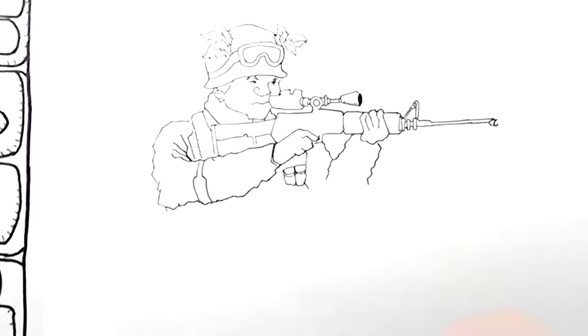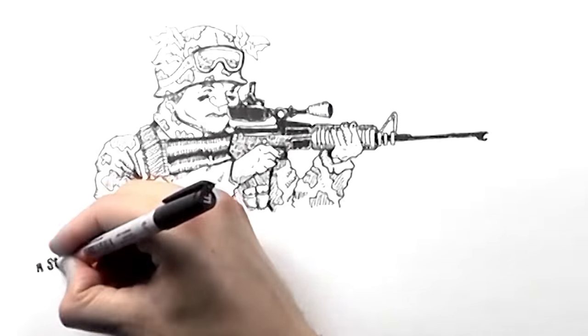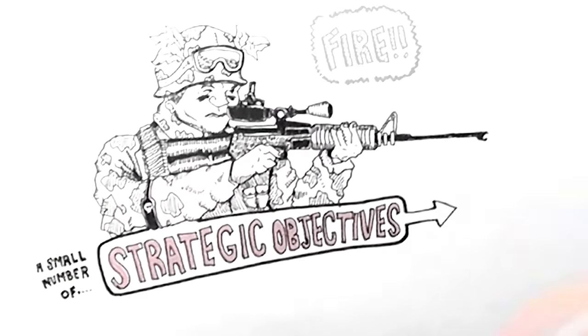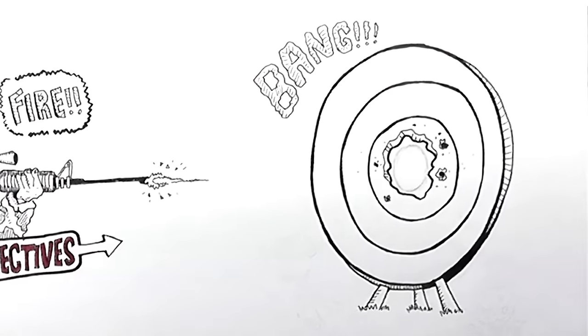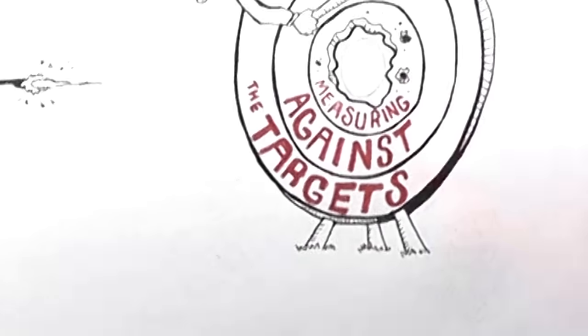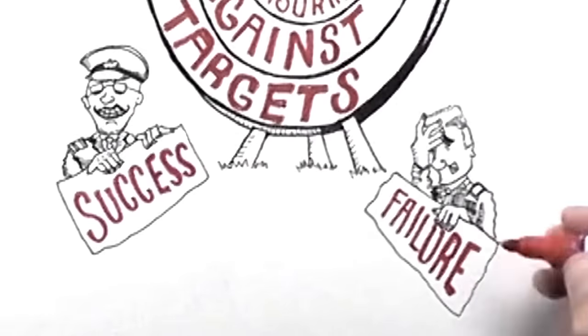Within each perspective comes the identification of a small number of strategic objectives, setting targets for the objectives and then measuring against the targets on a regular basis to determine success or failure.